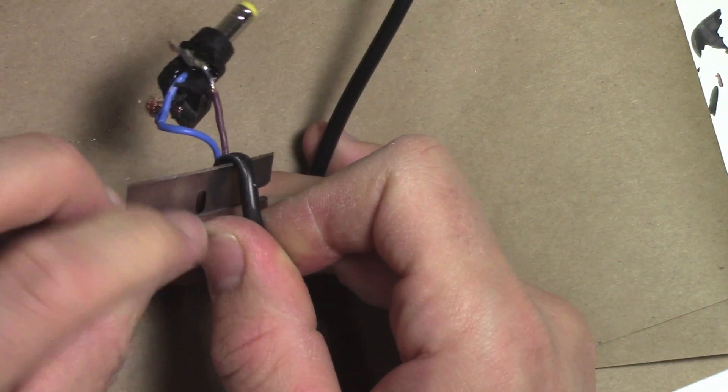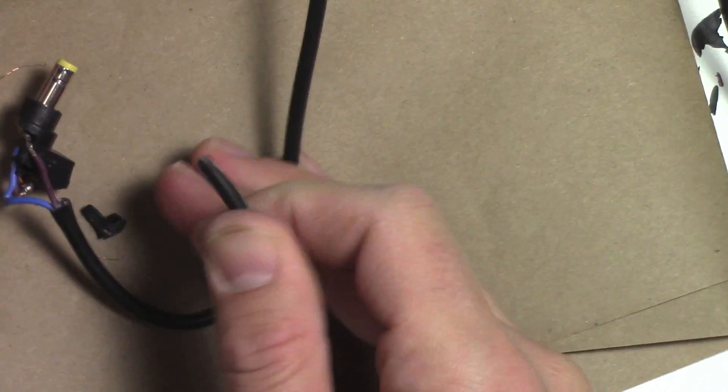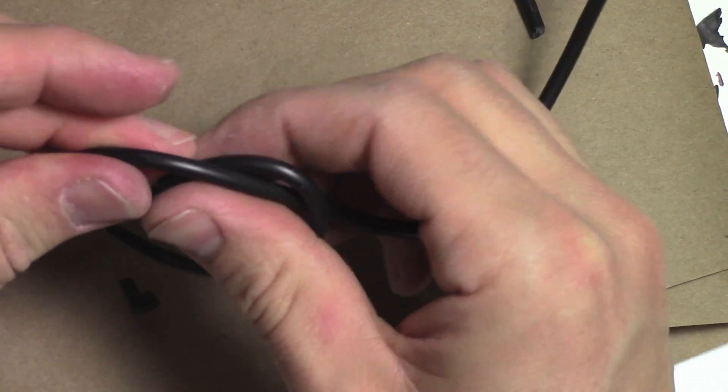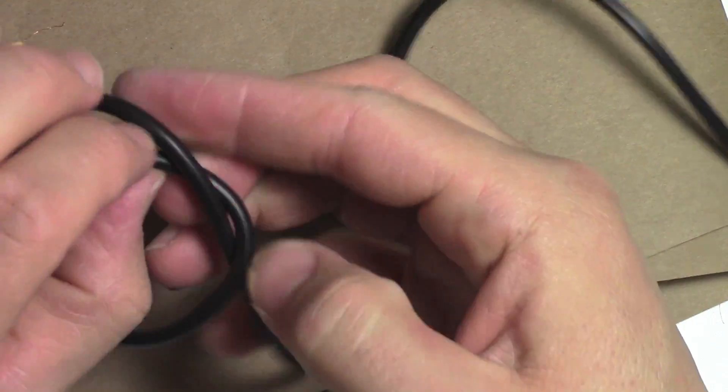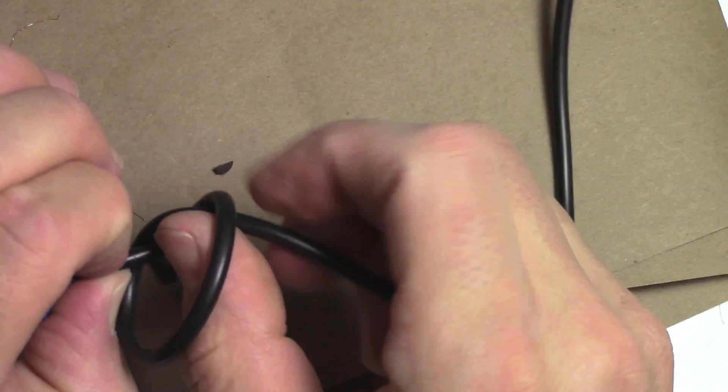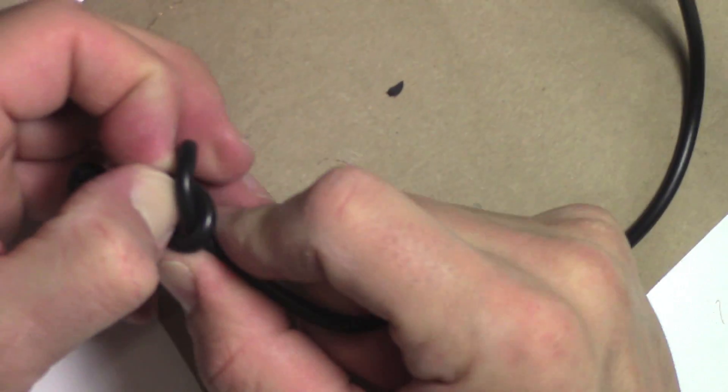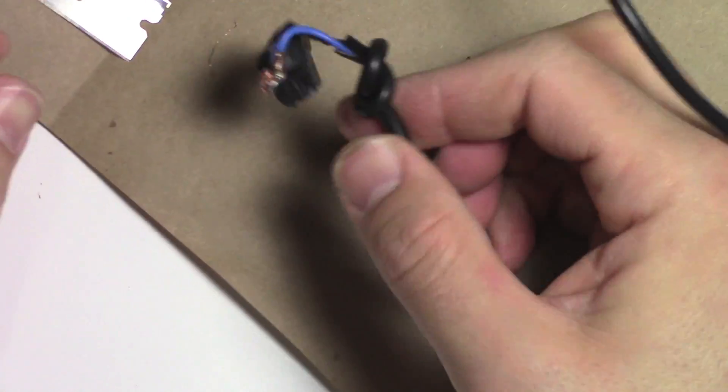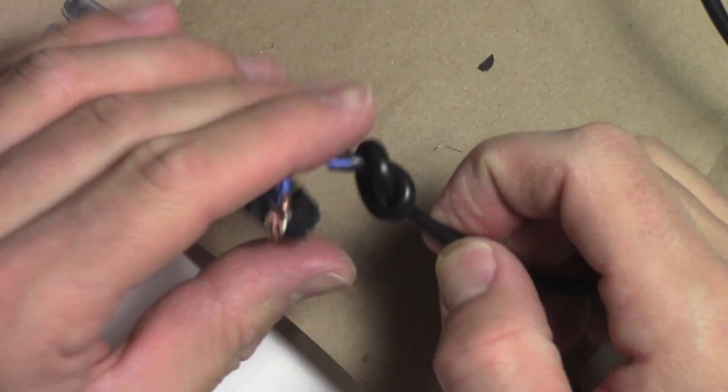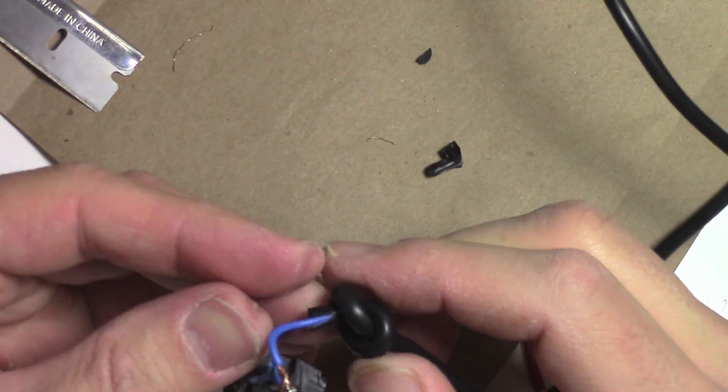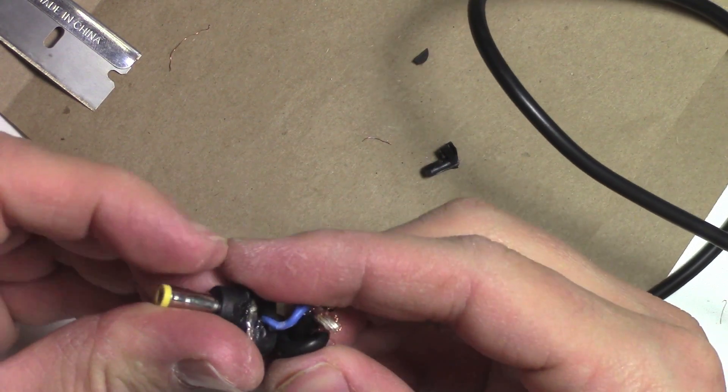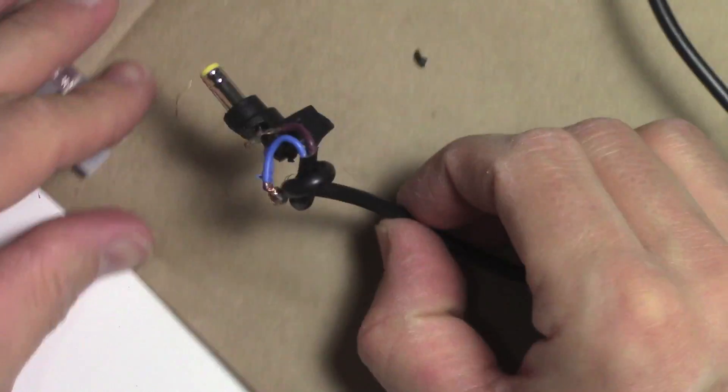And then to seal it we'll use hot glue. But before that, I'm going to tie a knot in the cable. That way it won't - it'll give it something to hold on to inside the hot glue. Otherwise it might rip the cables out again just like it did last time. So this is a good fix: tie a knot in the cable and then we're going to seal it in hot glue.